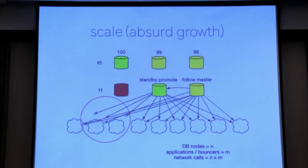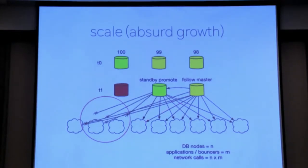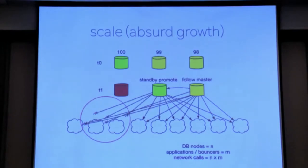To fix this issue, you could make the same calls from all masters — increasing the surface area of success. But now you have a complex graph of potential failures. If you have N database nodes and M application nodes, the number of network calls you're making can grow very large.